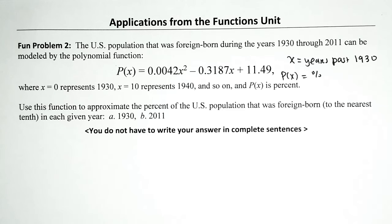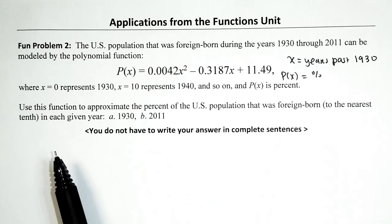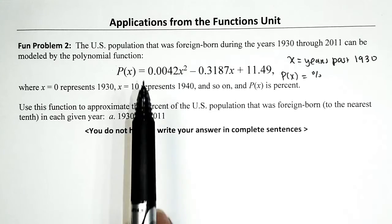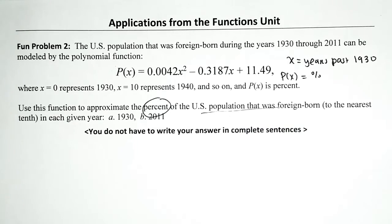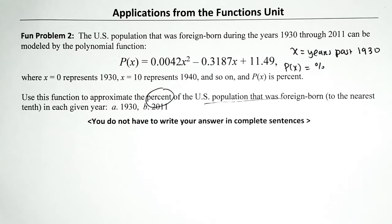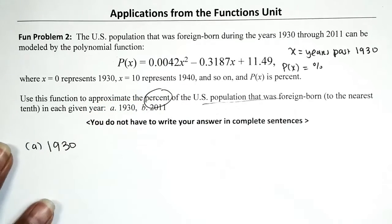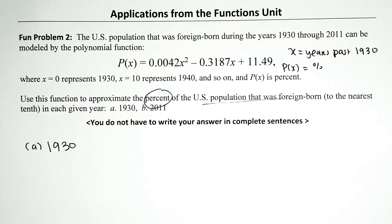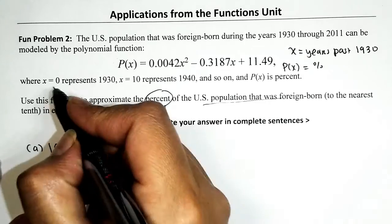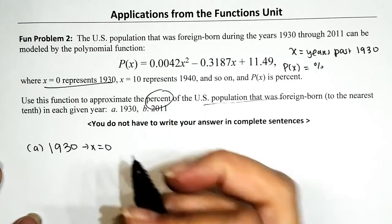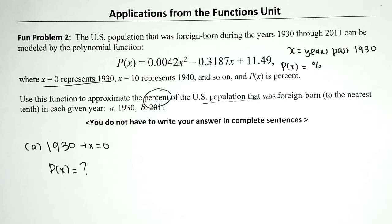The question reads: use this function to approximate the percent of the US population that was foreign born to the nearest tenth in each of the given years. Two questions, two answers, and we don't have to write our answers in a sentence. In part a we want to know the percent in 1930. 1930 corresponds to X equals 0. The percent is given by P of X, so this boils down to finding P of 0.